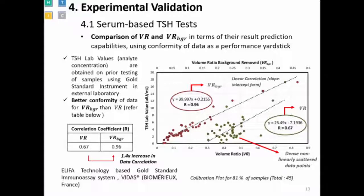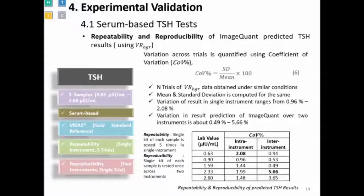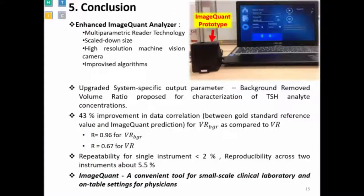The same approach was applied to five additional samples for inter- and intra-instrument measurement, to assess repeatability and reproducibility. We used two different prototypes of the ImageQuant instrument for reproducibility measurement, and repeatability was measured five times on a single instrument. The coefficient of variation for all measurements never exceeds six percent, which is accepted by all standards for TSH measurement.